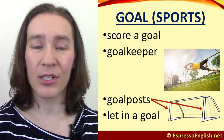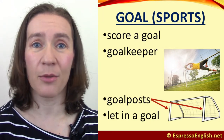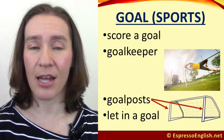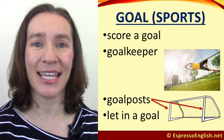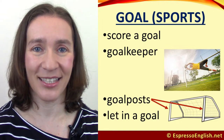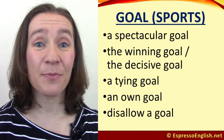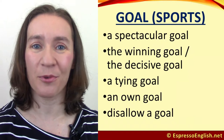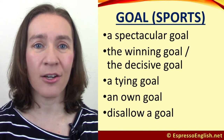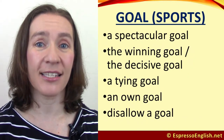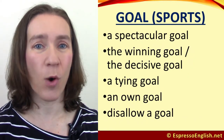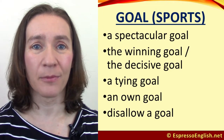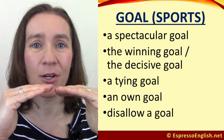Let in a goal is when the goalkeeper fails to prevent the ball from entering the goal. When the goalkeeper does stop the ball from entering, this is called making a save. A spectacular goal is a goal that was especially impressive. The winning goal, or the decisive goal, means the goal that won the game. A tying goal is a goal that made the score equal.